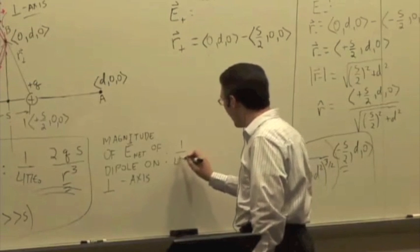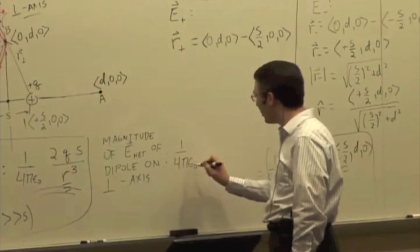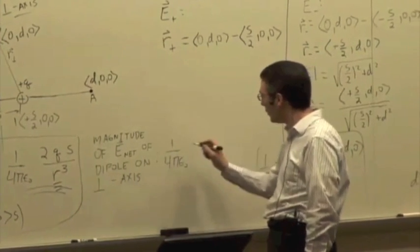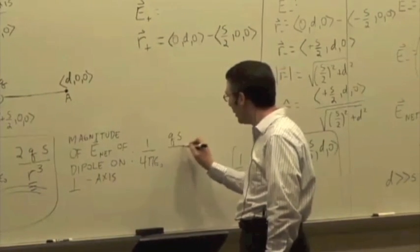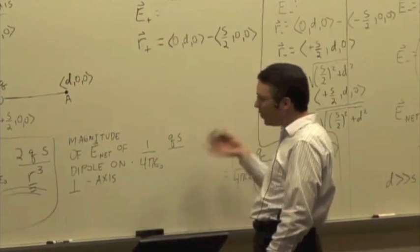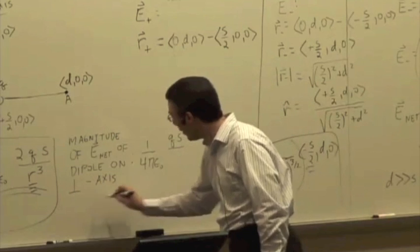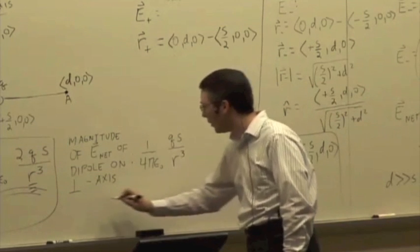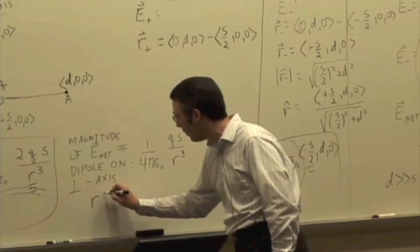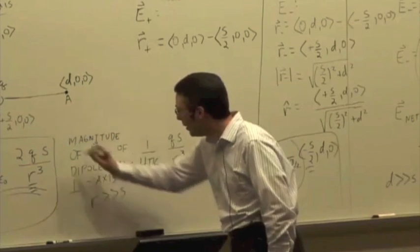And that is 1 over 4π epsilon 0. Similar looking expression, except that there's no factor of 2 here. It's just qs over r cubed, or if I can just make the substitution, call it r, we can just call it r cubed. So again, this is the approximation when r is much bigger than s.